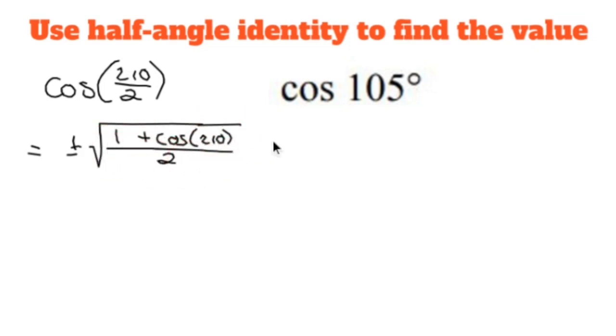Now, 210 lives in quadrant 3. Cosine is negative in quadrant 3, so this plus or minus is just going to be negative.